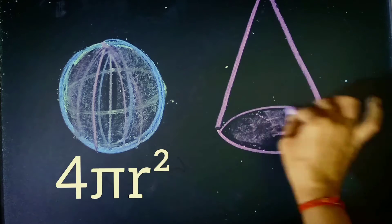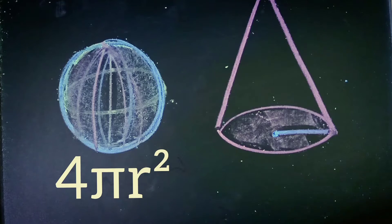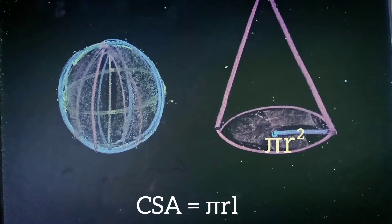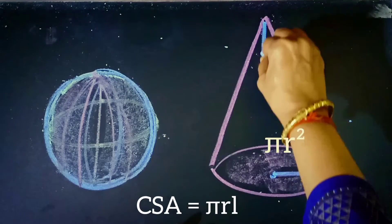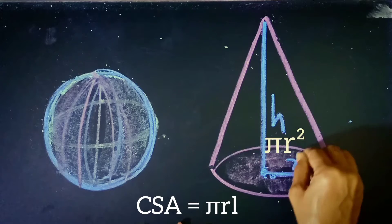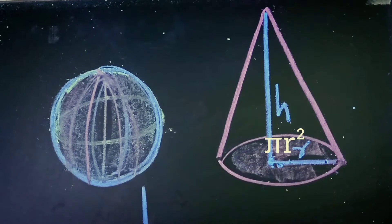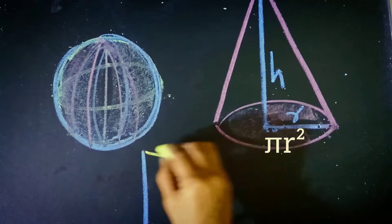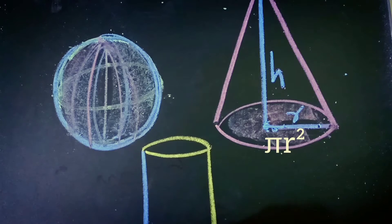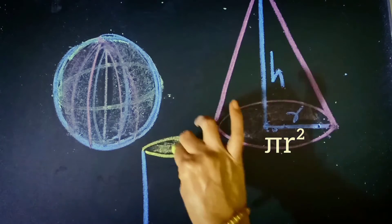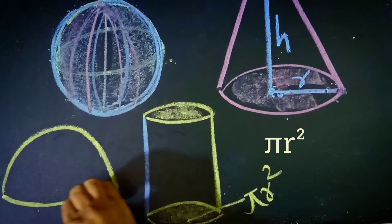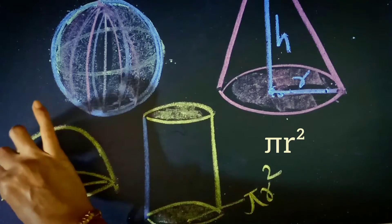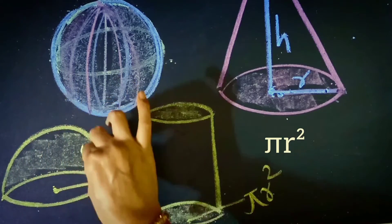A cone has a circular base; its area is pi r squared. If we exclude this circle we get the curved surface area of the cone. If we include the circular base it will be the total surface area of the cone. A cylinder has two circular bases — if we include the area of these bases we get the total surface area of the cylinder.